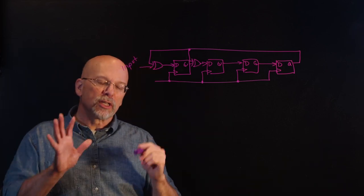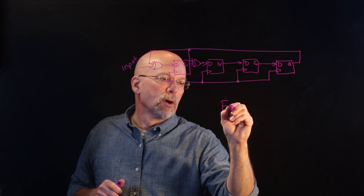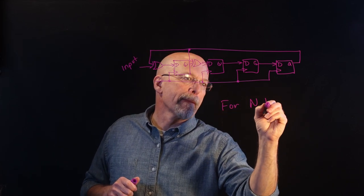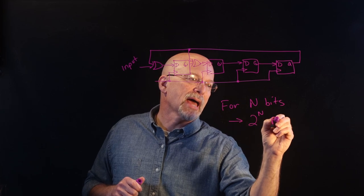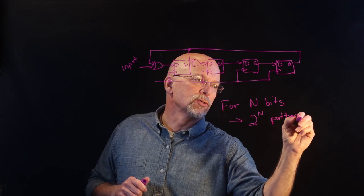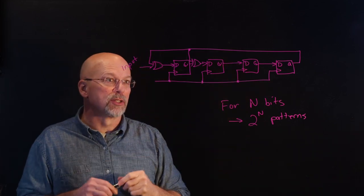Now, in order to do this properly, there are a couple of things that we need to remember. First of all, for n bits, there are two to the n patterns of ones and zeros, right? So contained in here, there are two to the n patterns of ones and zeros.